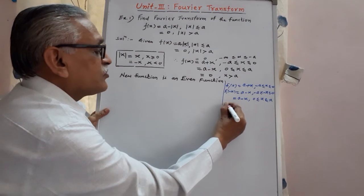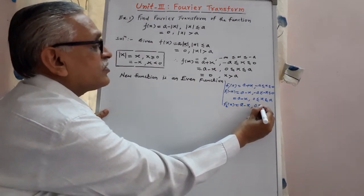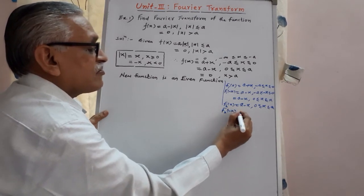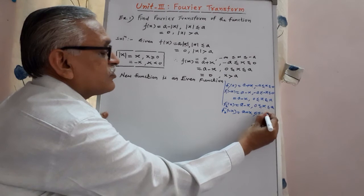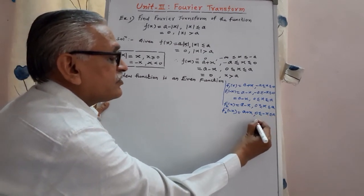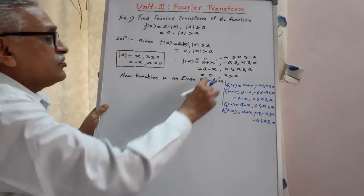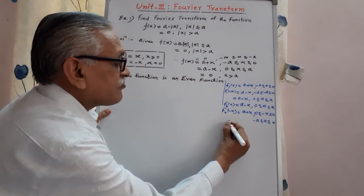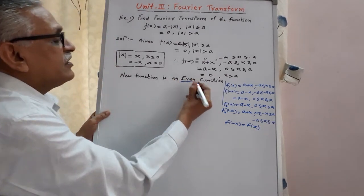Similarly, for the second piece, f2 of x equals a minus x for the condition 0 to a. Replacing x by minus x gives a plus x, with condition 0 less than or equal to minus x less than or equal to a. Multiplying by minus sign gives minus a less than or equal to x less than or equal to 0, and on that range the original value is a plus x — no change. Therefore f of minus x equals f of x, and the function is an even function.